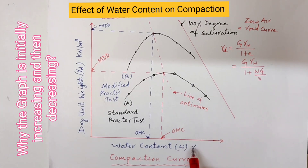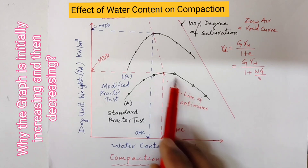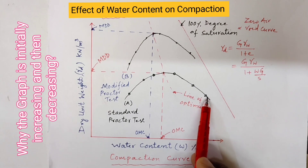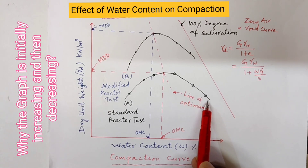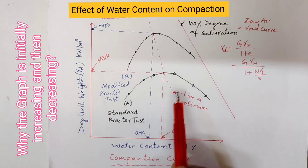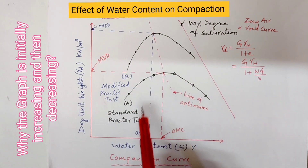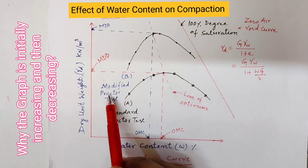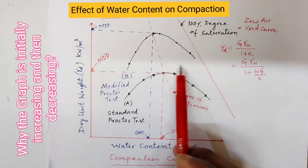When the water content increases beyond that limit, the dry density or dry unit weight decreases. There are two tests we will discuss in the next lecture: the standard Proctor and modified Proctor. The same pattern will show in modified Proctor also.